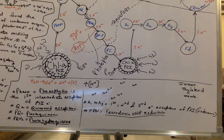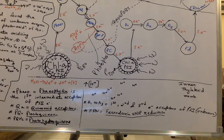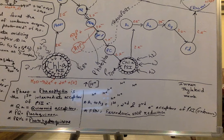Please note down the points and the whole reaction mechanism or diagram drawn on the board to make the concept clear. I know this is a little bit confusing, but I have tried my best to explain this whole process as easily as possible. Please watch my next video to learn about cyclic photophosphorylation. Thank you.